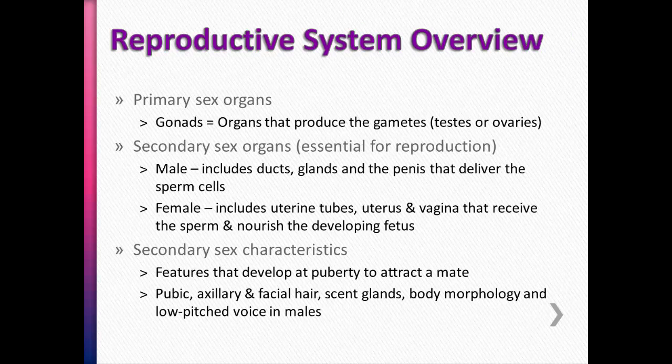The secondary sex organs are still essential for reproduction, but they don't make the eggs and sperm — they're not the primary sex organs. For males, it includes a bunch of ducts, some glands, and the penis for delivery of the sperm cells. For females, it includes the uterine tubes, the uterus to nourish and develop the fetus, and the vagina to receive the sperm.